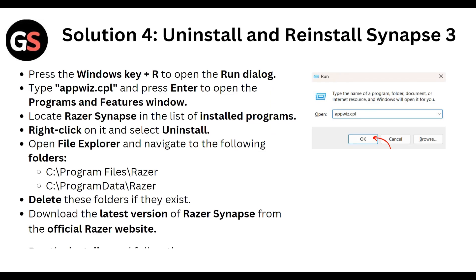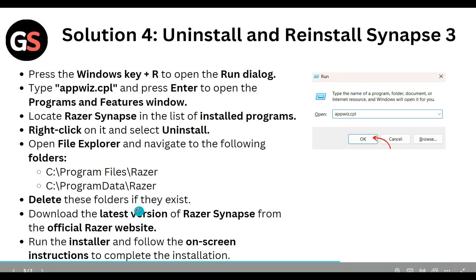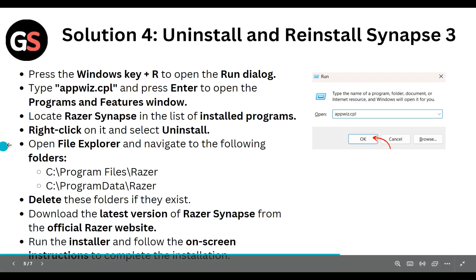Next, uninstall and reinstall Razer Synapse 3. Press Windows key plus R to open the Run dialog, type 'appwiz.cpl' and press Enter to open the Programs and Features window. Locate Razer Synapse in the list of installed programs, right-click on it and select Uninstall.